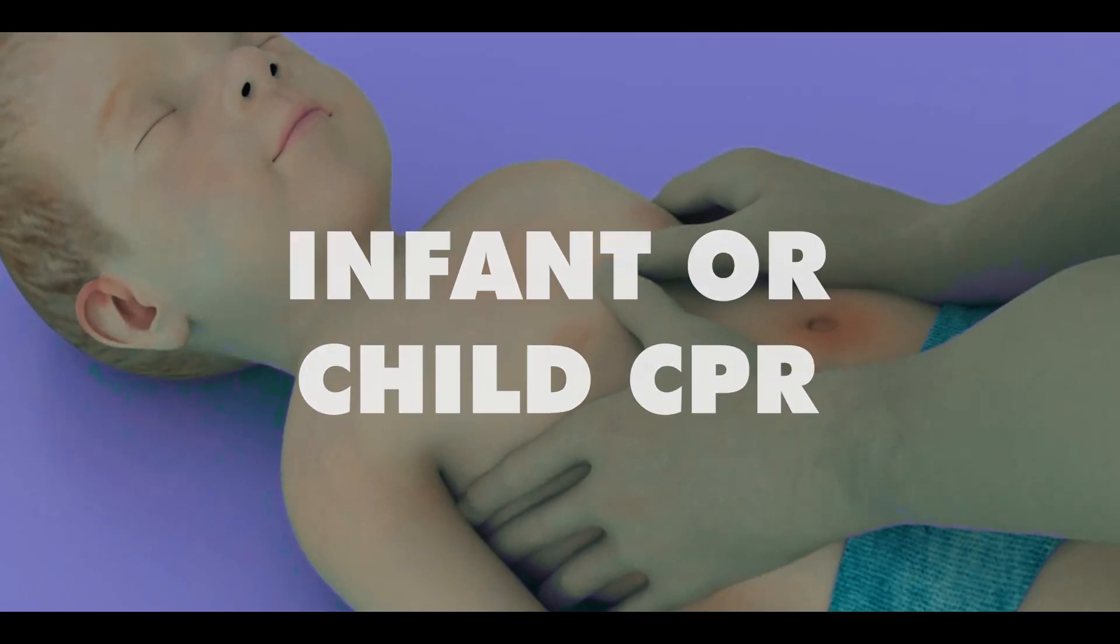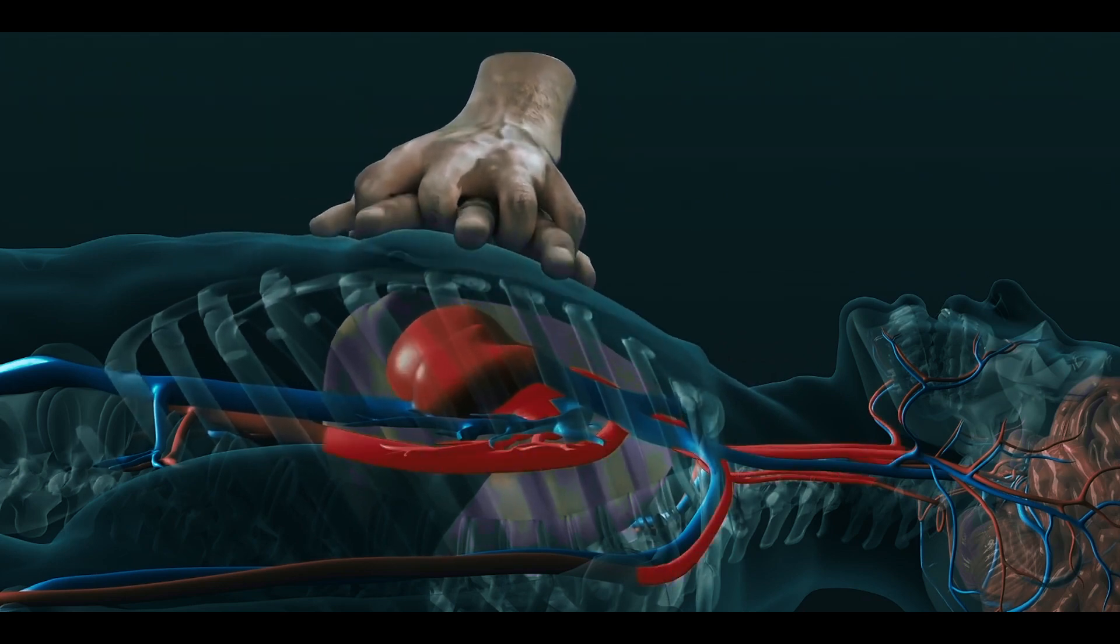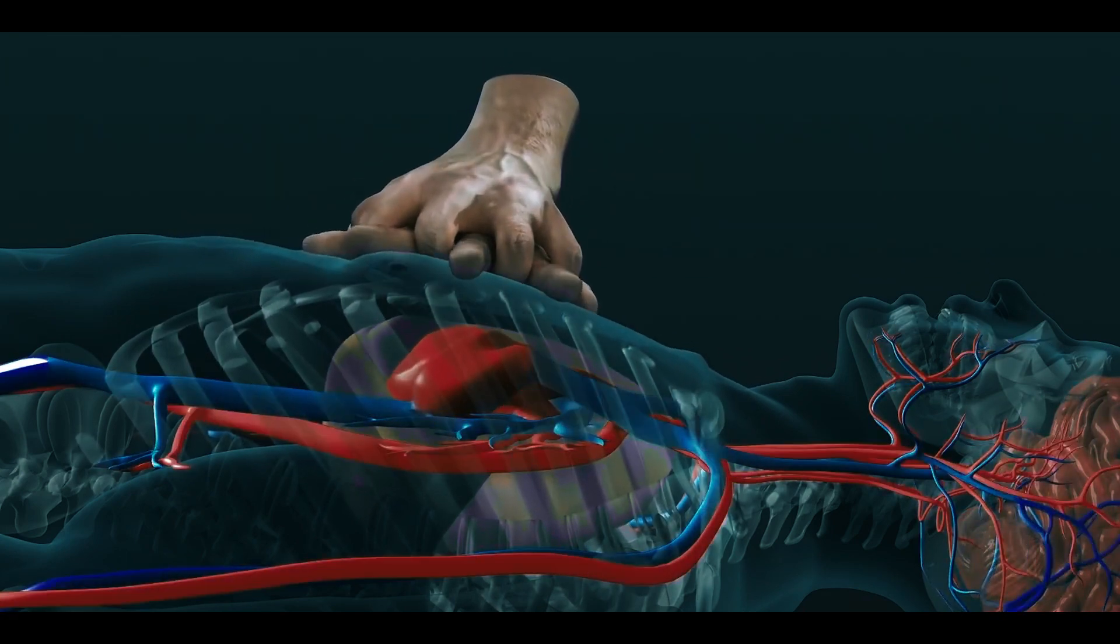Infant and child CPR is an emergency technique used to help oxygen and blood flow in a baby or child when their heart and breathing have stopped.